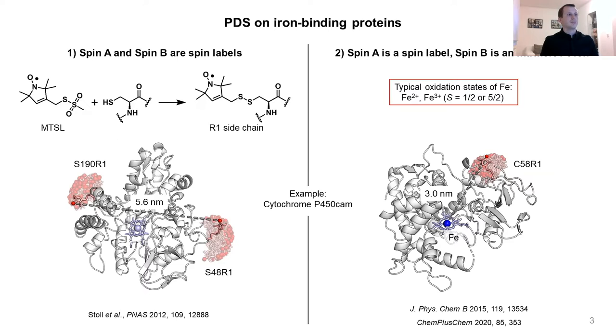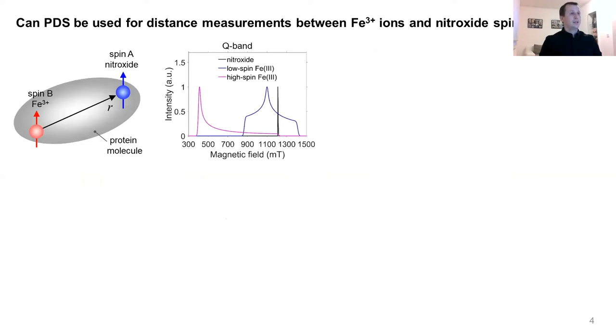Despite these advantages, the measurements between the iron ion and spin labels are way more difficult than the measurements between two nitroxide spin labels. The reason for that is the fact that both low-spin and high-spin iron ions have very broad EPR spectra. This broad EPR spectrum makes most PDS pulse techniques very inefficient. So the question we addressed in our study was: can we do distance measurements between intrinsic iron ions and nitroxide spin labels in an efficient way?